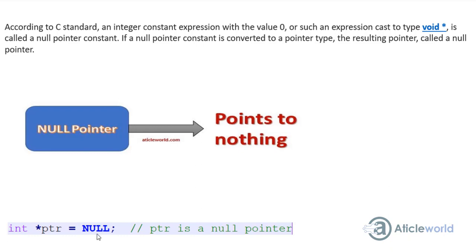If we assign the NULL macro to any pointer, that pointer becomes a null pointer. So here PTR is an integer null pointer and it points to nothing.